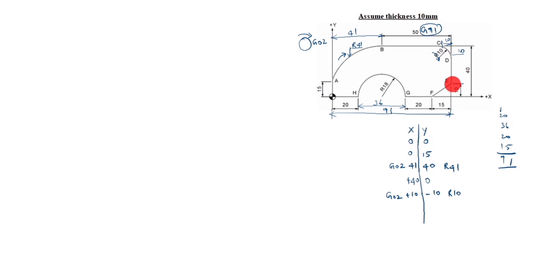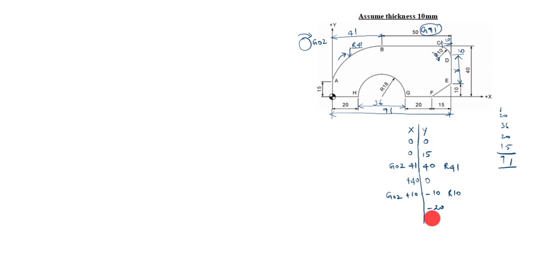D to E: X-axis is 0, starts from here. Y-axis value is 40; you have to minus 10, giving 20. This value is 20, so Y-axis is minus 20. It comes downside, so minus 20. X-axis is 0. Up to here finished.